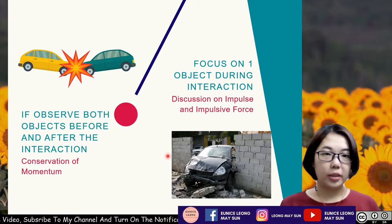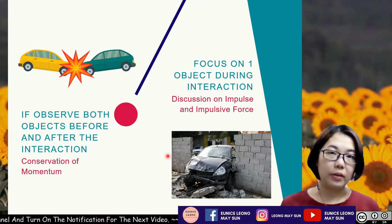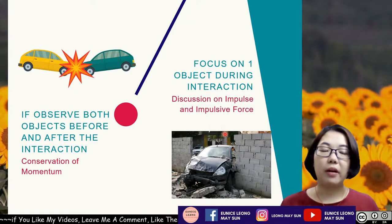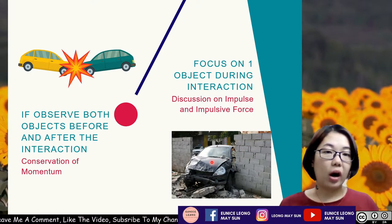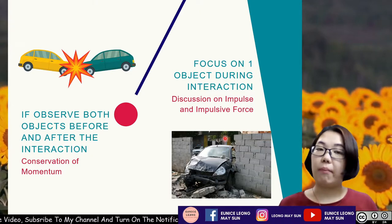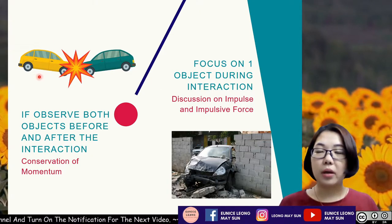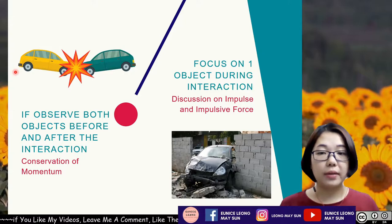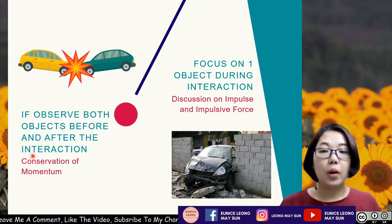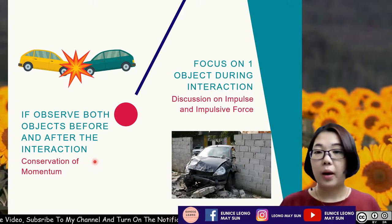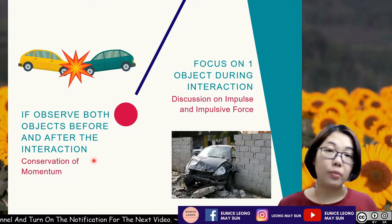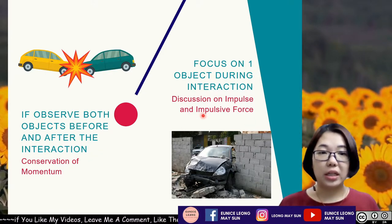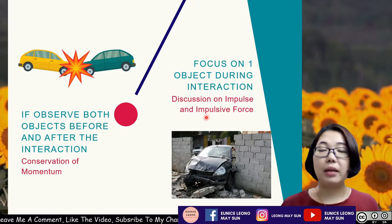Let me clarify one thing. When we talk about the interaction of two objects, if we focus on one object during the interaction — for example, the car hitting the wall — we focus only on the car, and we discuss its impulse and impulsive force. But if we're talking about two cars colliding and we consider both cars, we talk about conservation of momentum, which we will discuss in another video. For this video, we will focus on one object during the interaction and discuss impulse and impulsive force.